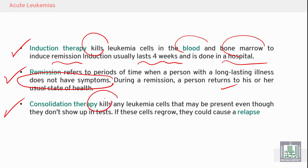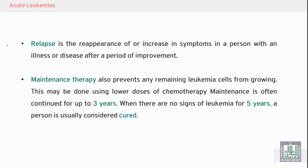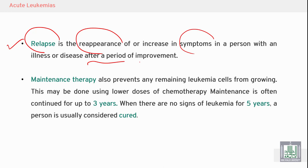Consolidation therapy kills leukemic cells that may be present even though they don't show up in tests. If these cells regrow they could cause relapse, so consolidation therapy is used to prevent minimal residual disease. Relapse is when symptoms reappear in a person after a period of improvement.